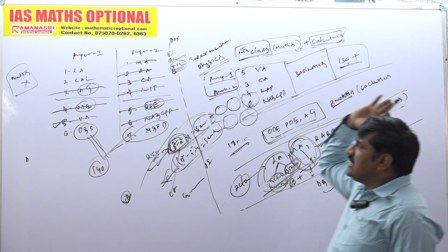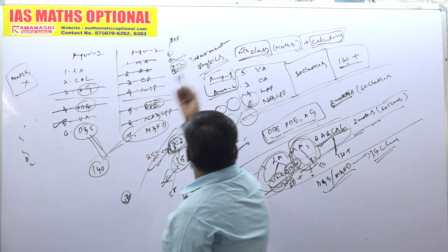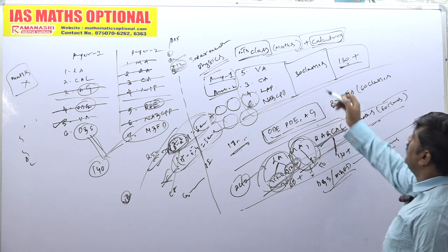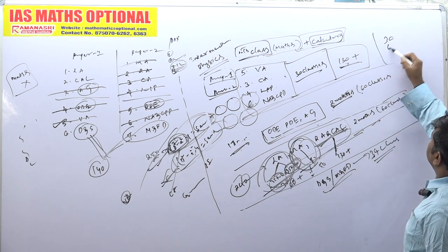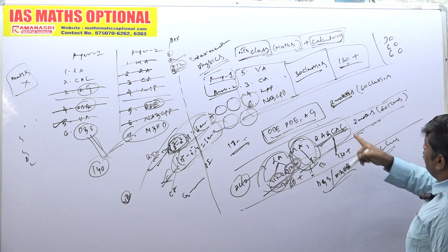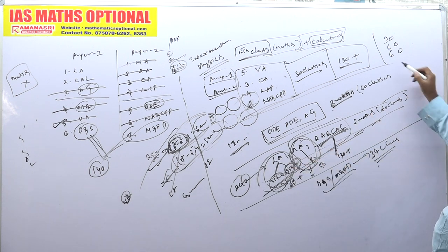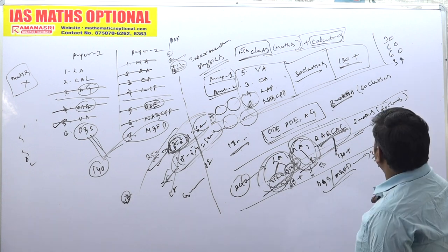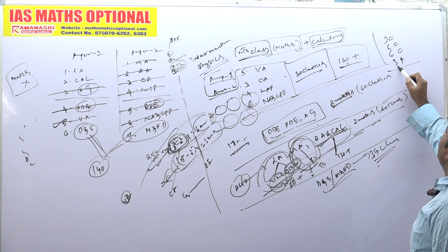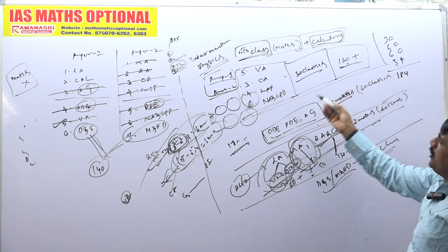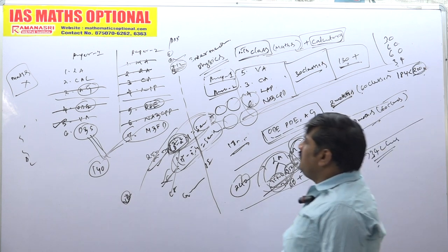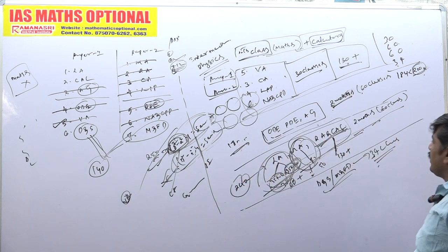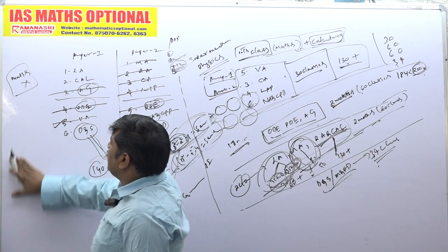I told you the number of classes: 30 classes for one part, 60 classes here, 60 classes here, 34 classes there. Total how many classes? 120 plus 30 is 150, maybe 184. If you are too slow, it won't exceed 200. Always lesser than 200. Therefore, 200 classes is sufficient. Where are we investing the time? 200 classes.